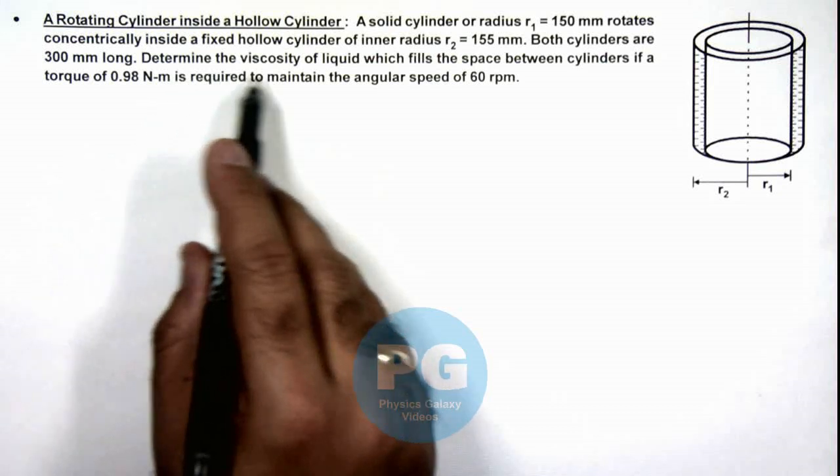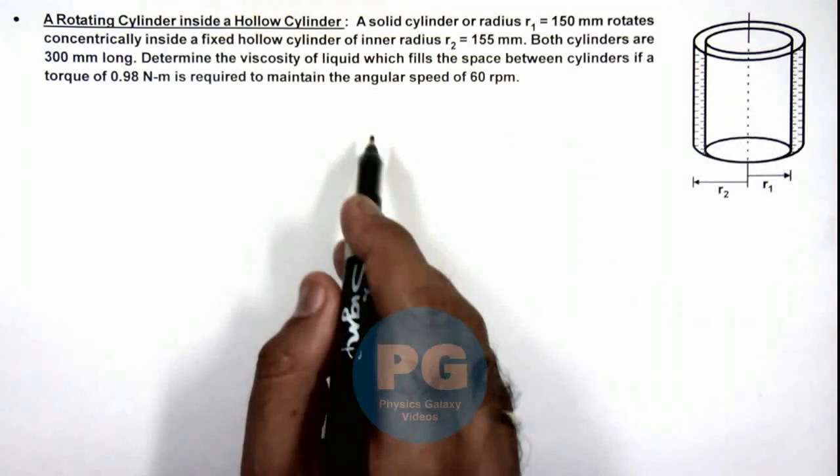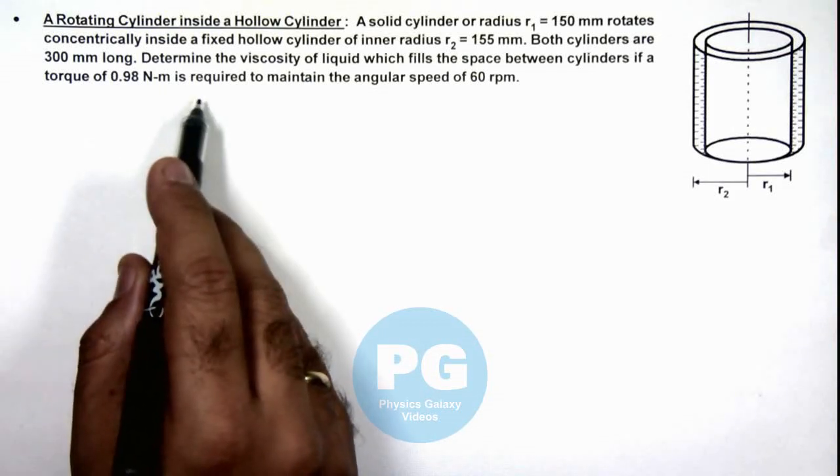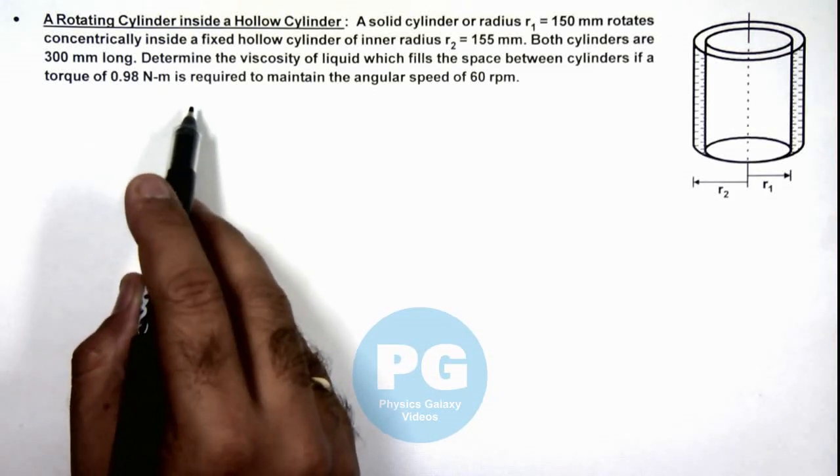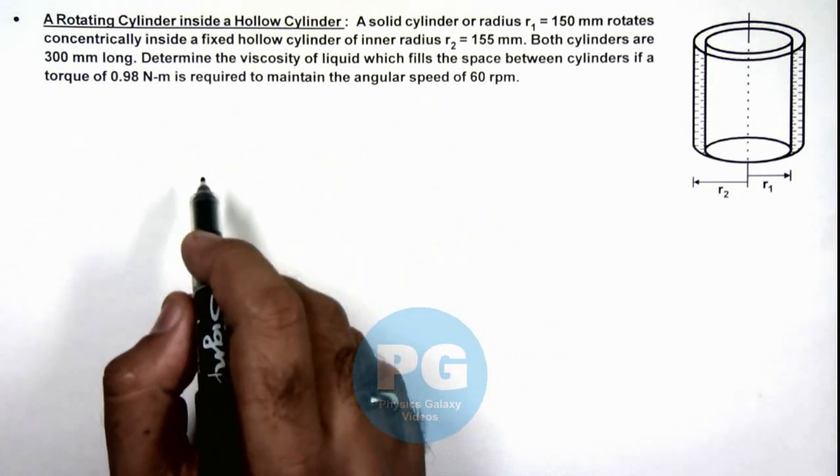Here, we are required to determine the viscosity of liquid which fills the space between cylinders, if a torque of 0.98 newton meter is required to maintain the angular speed of 60 rotation per minute.